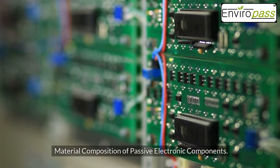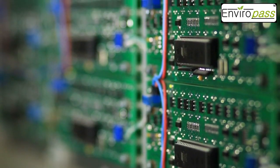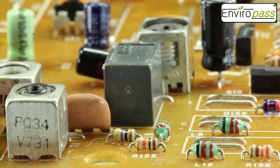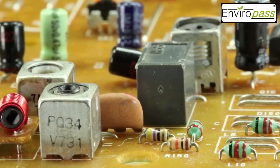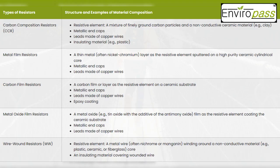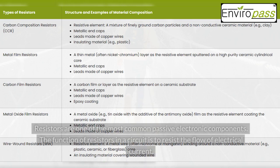Material composition of passive electronic components. There are many various types of resistors with different compositions: carbon composition resistors (CCR), metal film resistors, carbon film resistors, metal oxide film resistors, and wire wound resistors (WW).